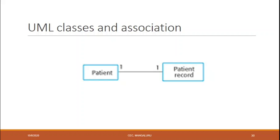Each patient has exactly one record, and each record maintains information about exactly one patient. Other multiplicities are also possible. As seen in the previous module, you can define exactly one object or more; if you want more, you can place a star (*) to indicate an indefinite number.